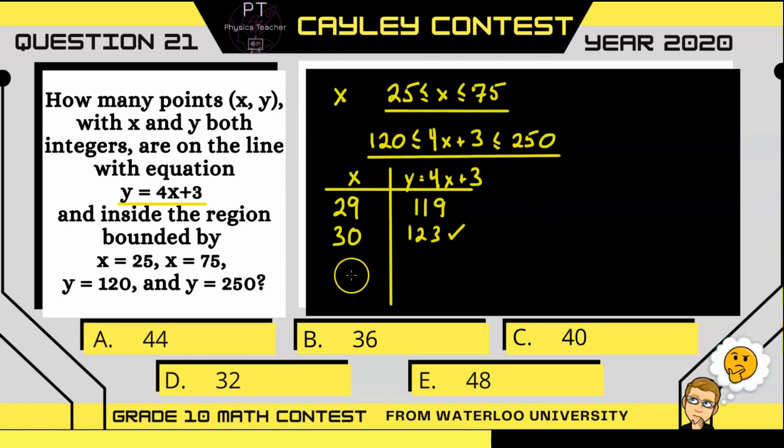Now if we keep testing numbers bigger and bigger for x, what we can see is when x is 61, the value of y is going to be 247. So that is still within this range, but you can see that the next value, 62, is going to be outside that range at 251.